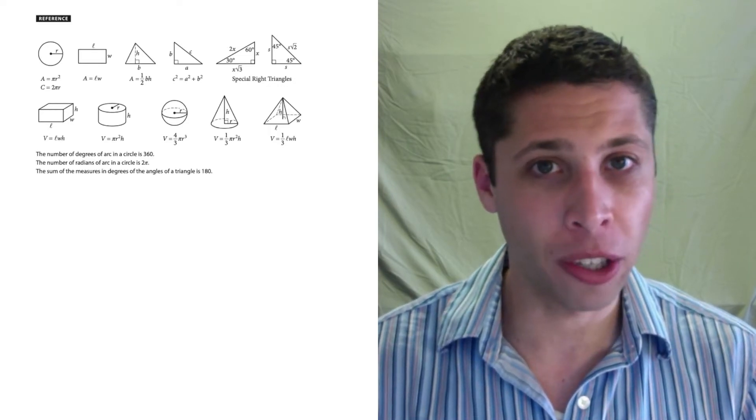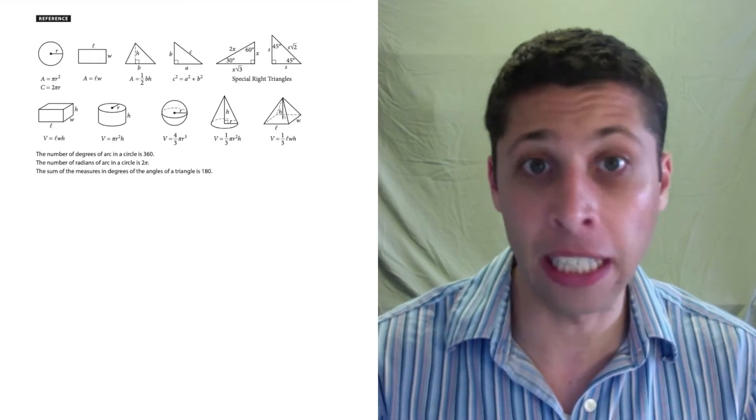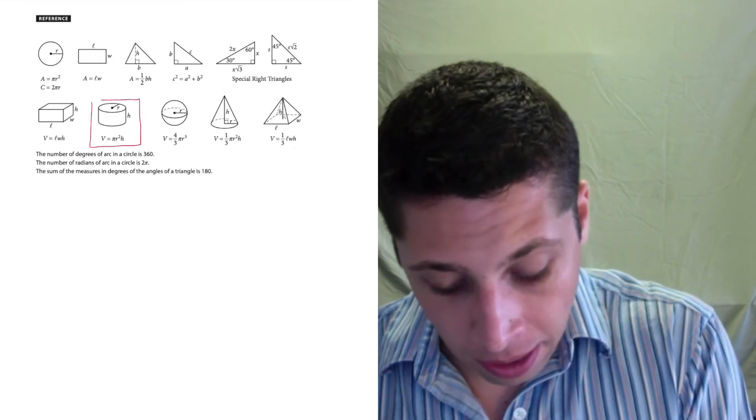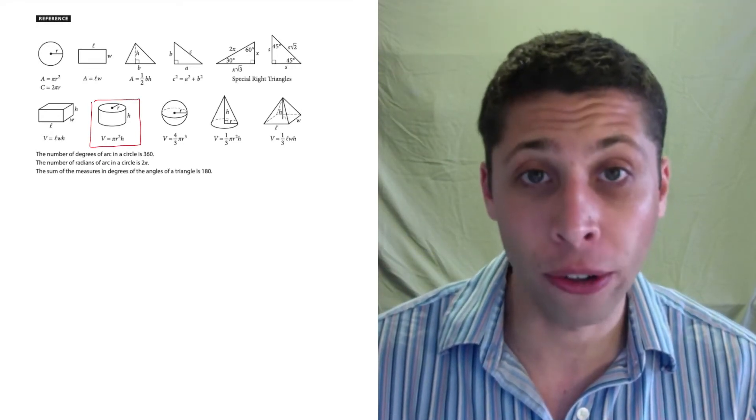So if you're ever on a geometry question and stuck, make sure you flip back. See if there's a formula that they're giving you that you could use. In this case, it's the cylinder formula, which is right there, volume equals pi r squared h.